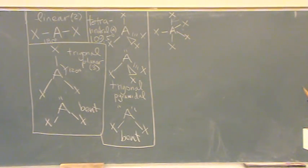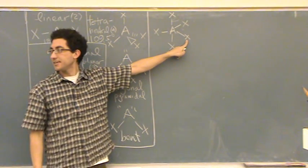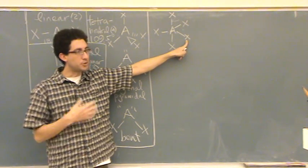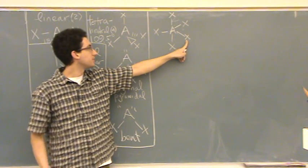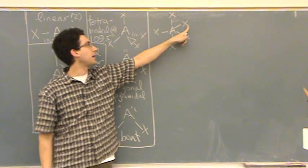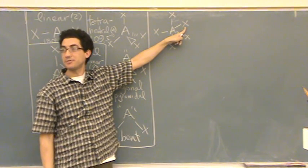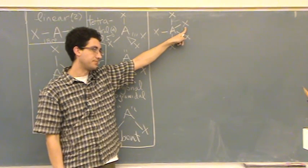Something like that, where this X here is coming towards you. So I could actually draw it with a wedge if I wanted to, but most people, when they see this shape, it's assumed. So the lower X is coming towards you. The upper X here, this X is going away from you. So I could draw it with a dash if I wanted to, but I think this is a little simpler.